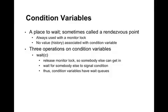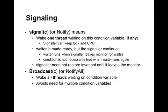There are three operations that can be used on condition variables. The first operation is wait. When you wait on a condition variable, the wait operation will release the monitor lock so somebody else can get in. This is important because the reason to wait is you're waiting for something to become true, and if you're holding the lock nobody can change the state variables you're waiting for. So when you call wait, the operation releases the lock and adds the thread to a queue waiting for a signal. This means that condition variables are really just queues — they don't actually have any state of their own. The second operation is called signal, or sometimes notify. When a thread calls signal, it will wake up one thread that is waiting on the condition variable if any. If no threads are waiting, signal does nothing at all.